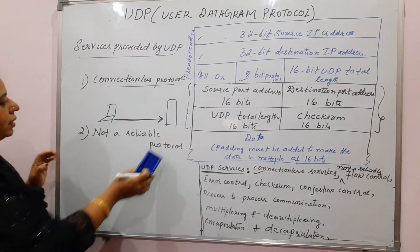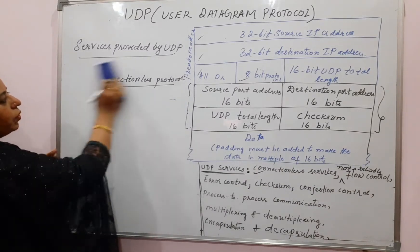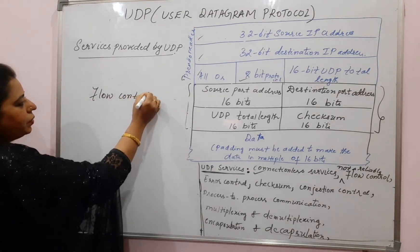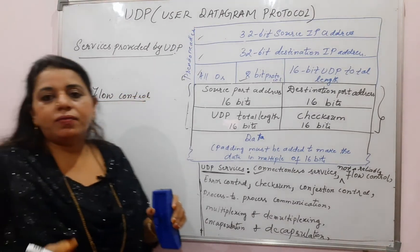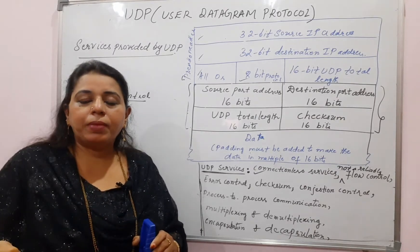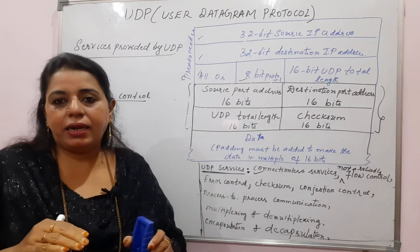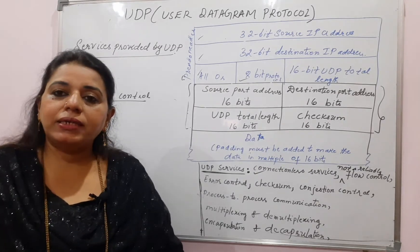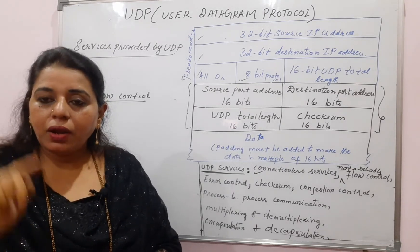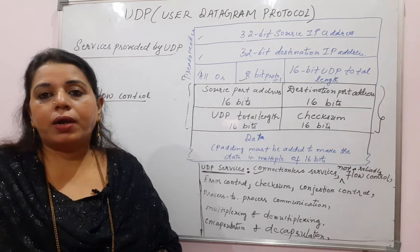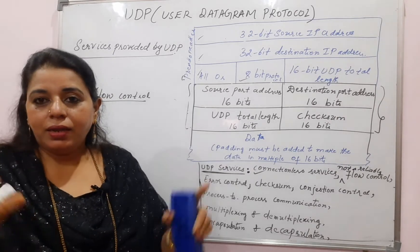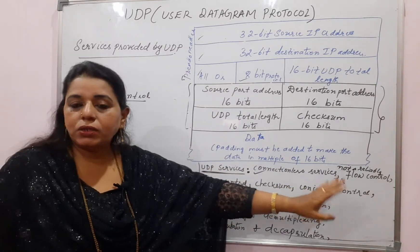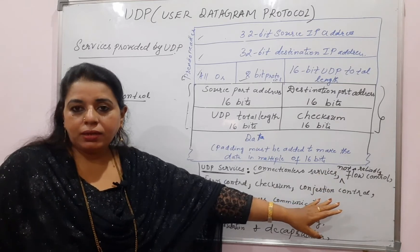Next we have flow control. In the transport layer introduction, I have clearly told you that the receiver should process the data at the same rate at which the sender is sending the data. Otherwise, there will be overflow of packets at the receiver side. In order to solve that problem, there should be a flow control mechanism. But UDP does not support flow control — there is no flow control mechanism in the UDP protocol.